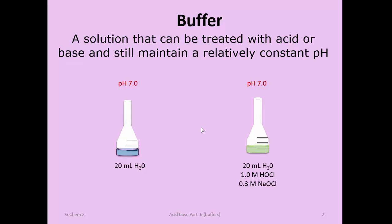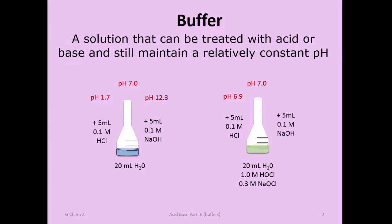To understand how this works: if you treat the water with 5 mils of 0.1 molar HCl, the resulting pH shifts all the way down to 1.7, and treating the same water with 5 mils of 0.1 molar sodium hydroxide raises the pH all the way to 12.3. In comparison, treating a similar volume of the pH 7 buffer with 5 mils of 0.1 molar HCl only lowers the pH to 6.9, and treating it with 5 mils of 0.1 molar sodium hydroxide only raises the pH insignificantly slightly above 7. That's what a buffer is at its core—it maintains a pH even when treated with either an acid or a base.